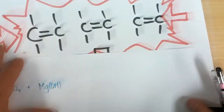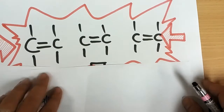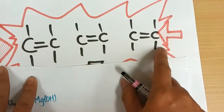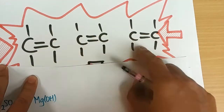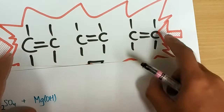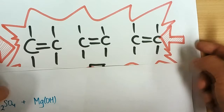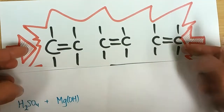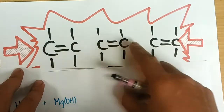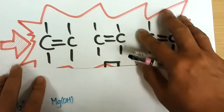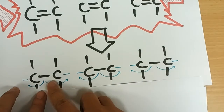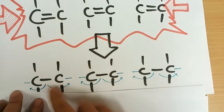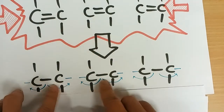So how does everything happen? We can have thousands of alkene molecules, or unsaturated compounds, in a container. We apply lots of heat and pressure because they are gases, and what happens is one of the double bonds will break and open up.